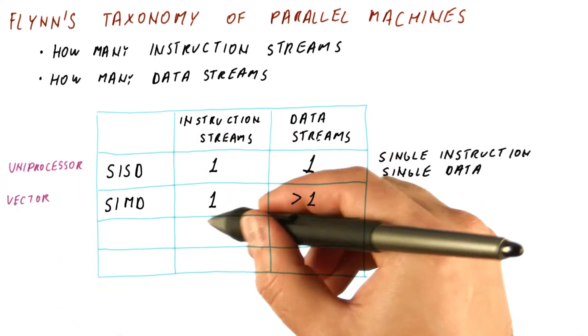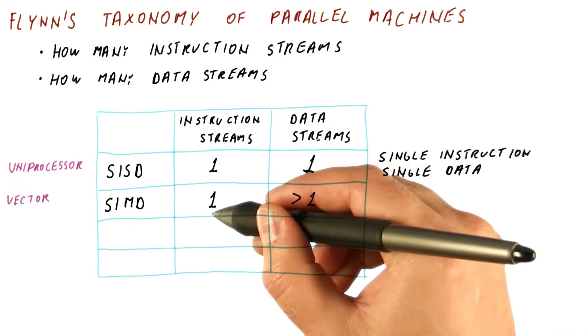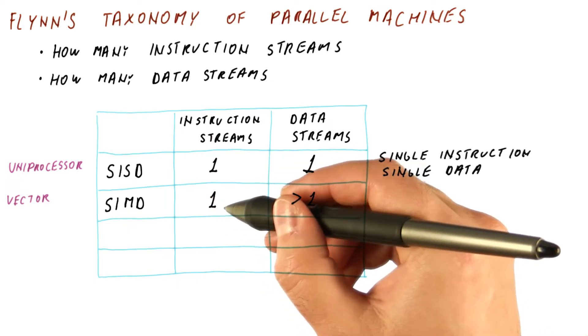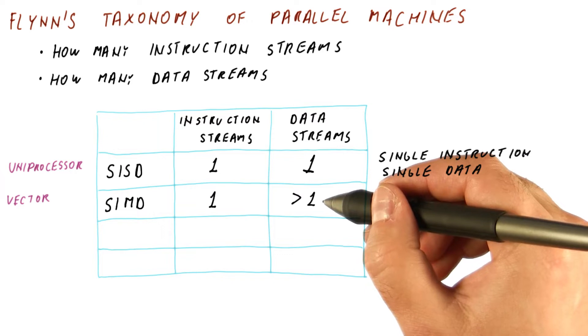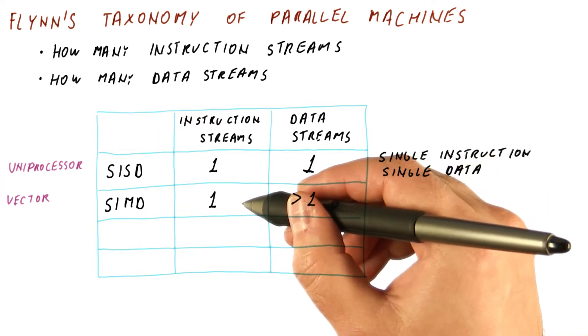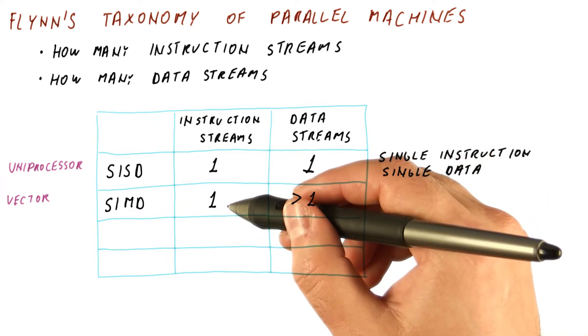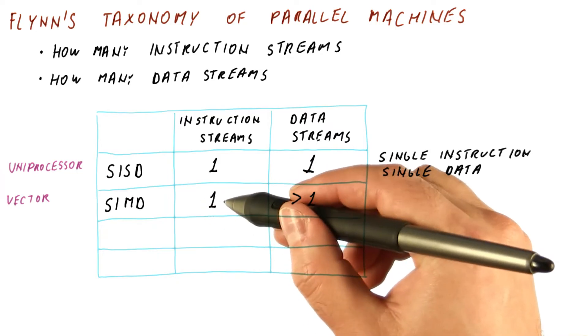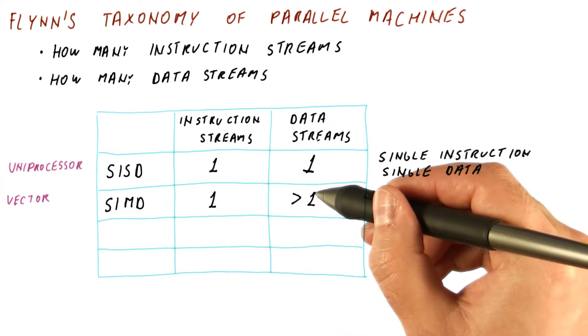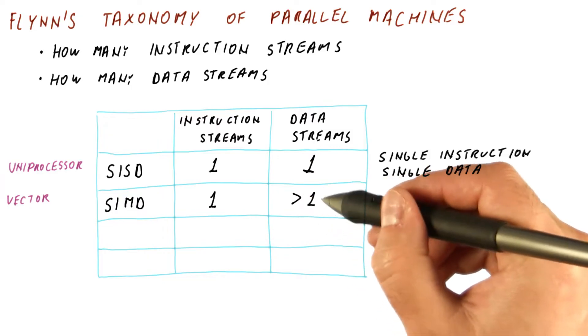Vector processors execute a program, but each instruction, instead of operating on normal scalar values, operates on vectors. For example, you can execute an add instruction, but it operates on two source and one destination vector of things, so it operates on many data items at a time.